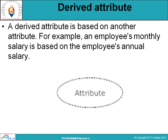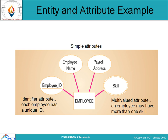This combined example shows the entity and attribute together. The entity 'employee' is represented in a rectangular box and contains attributes in oval shapes: employee ID must be unique so it is represented with an underline, and employee name, payroll, address, and skill are attributes of the employee. In database table terms, this diagram represents the linking of entity and attribute.